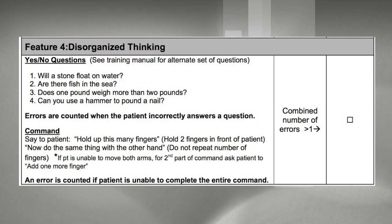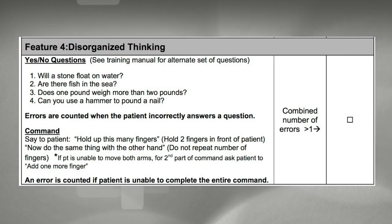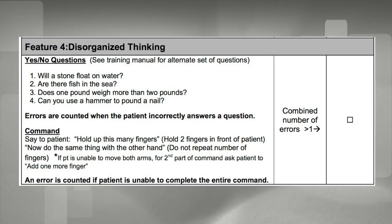For disorganized thinking, the RN will ask a series of yes or no questions and have the patient follow a command. If the patient makes more than one mistake, they fail this section.